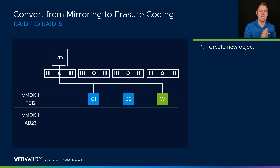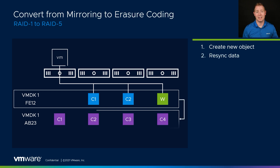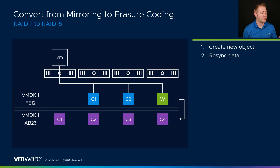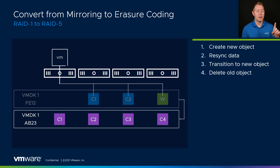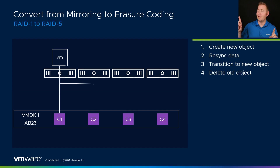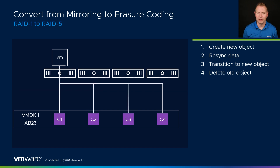The next thing we start is a re-sync. We start copying that data — it's basically a copy-paste operation — from this RAID1 FTT of one object to our RAID5 FTT of one object. Once the re-sync is done, we'll have a transition period. We'll transition from our FE12 VMDK over to our AB23 VMDK, and that'll be seamless on the front end.